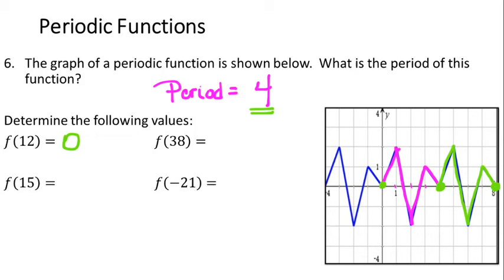For f(15), I want to think of a number close to 15 that's divisible by 4 — that would be 16. I know that at X = 16, every 4 units brings us back to 0. So when X is 16 we're at 0, meaning I back up one unit to X = 15, which corresponds to this point on our function where the function value is 1.